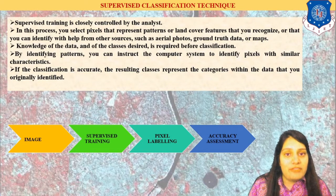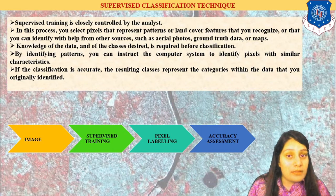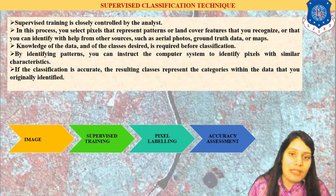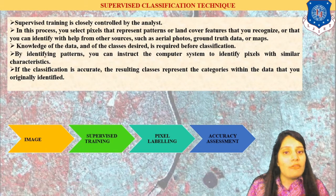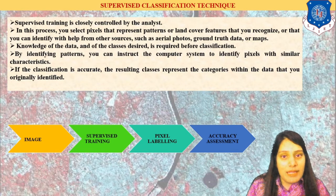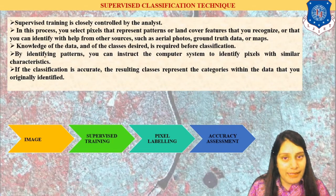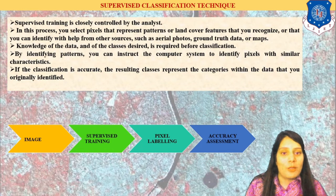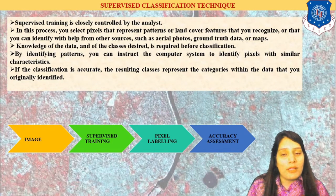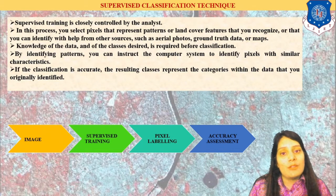Basically, we have the image, then the supervised training samples — the classes I am assigning are known as training samples. Then I have pixel labeling: how many classes I am selecting, and I give one pixel label to it. Last is the accuracy report — the accuracy assessment of my technique. All the features, land cover, and land use that I want to map are produced using supervised classification technique.